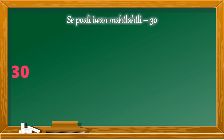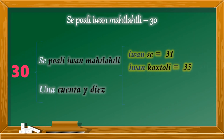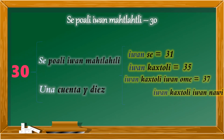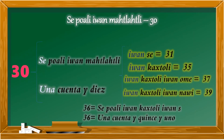Para conformar cantidades mayores a 20 se requiere usar los números del 1 al 19. Para conformar 30 se necesita usar cepoali iwamachiknawi, y posteriormente se irán agregando los otros números. Por ejemplo, para 31 sería cepoali iwamachiknawi iwanse. Para formar 35, recordemos que el 15 tiene su nombre propio, así que sería cepoali iwamachiknawi, y así sucesivamente con los demás números.